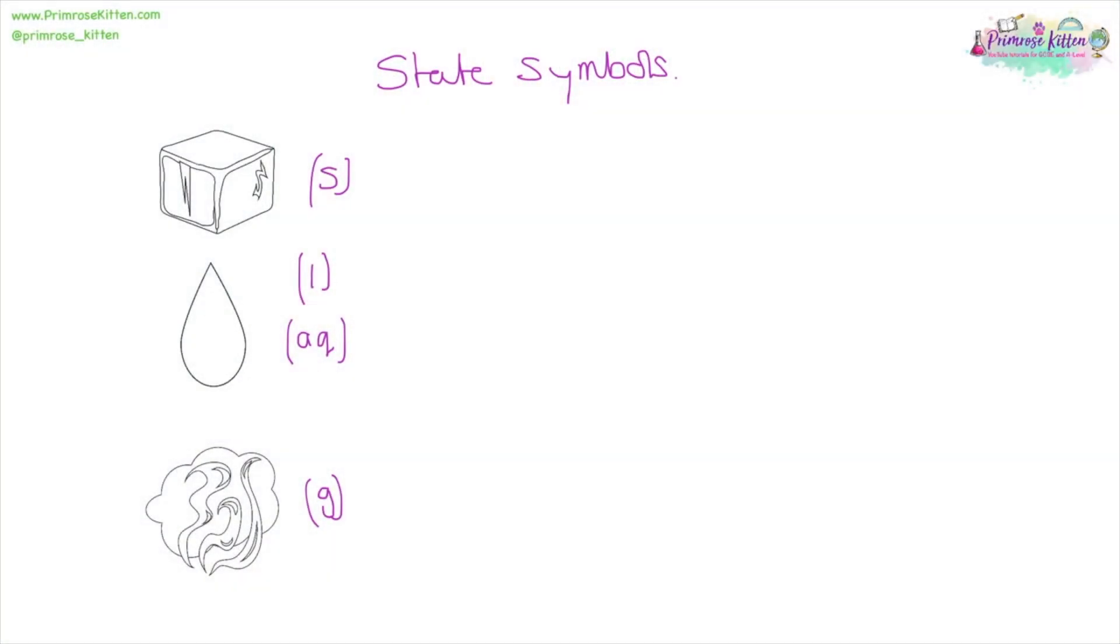State symbols tell us what state something is in. S is a solid, L is liquid, AQ is aqueous, and G is gas.